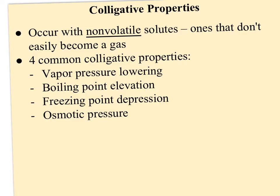Colligative properties tend to occur with non-volatile solutes. Non-volatile means they don't easily become a gas — if a solute is a gas, it'll easily escape the solution and won't hang around long enough to have an effect. We're talking about solids or liquids that stay in solution. The four common colligative properties are: vapor pressure lowering, boiling point elevation, freezing point depression, and osmotic pressure.